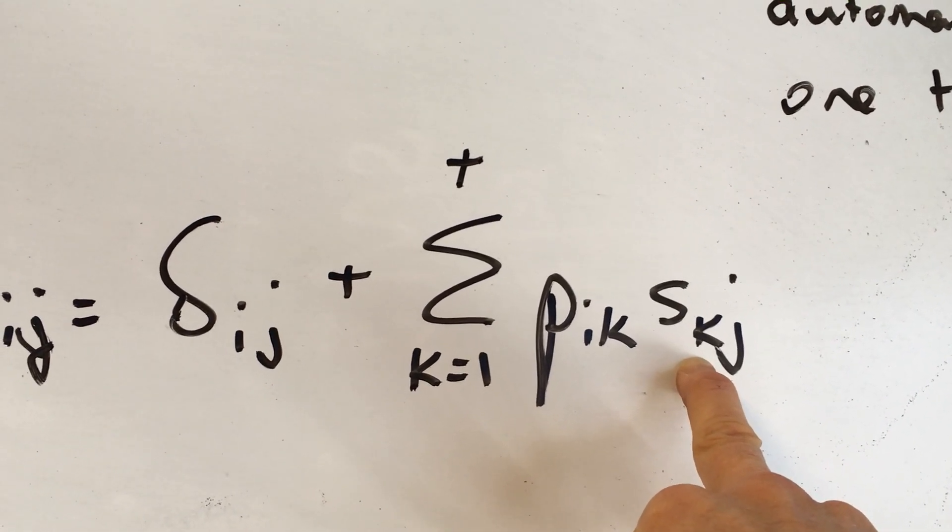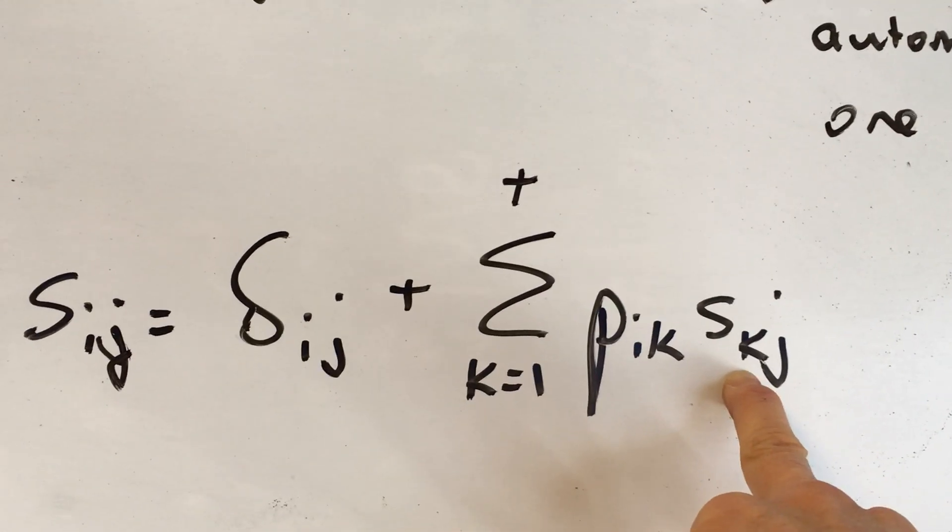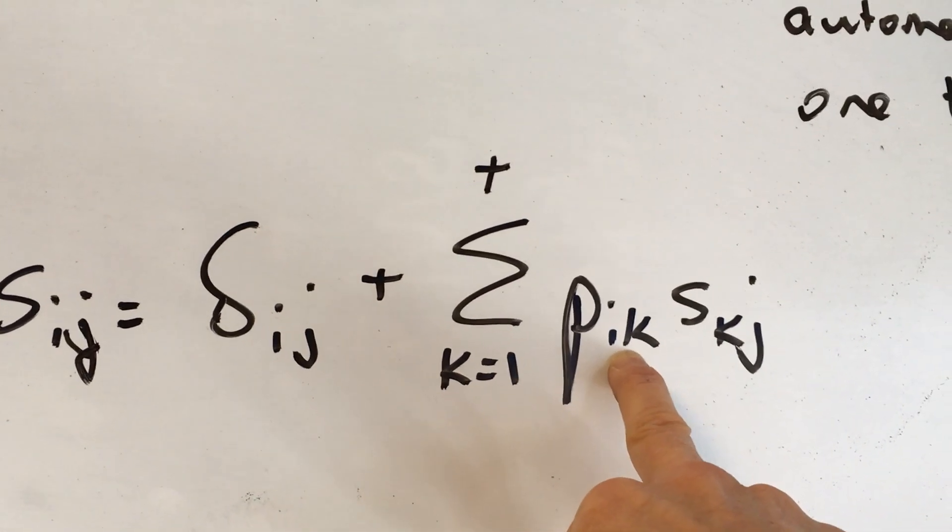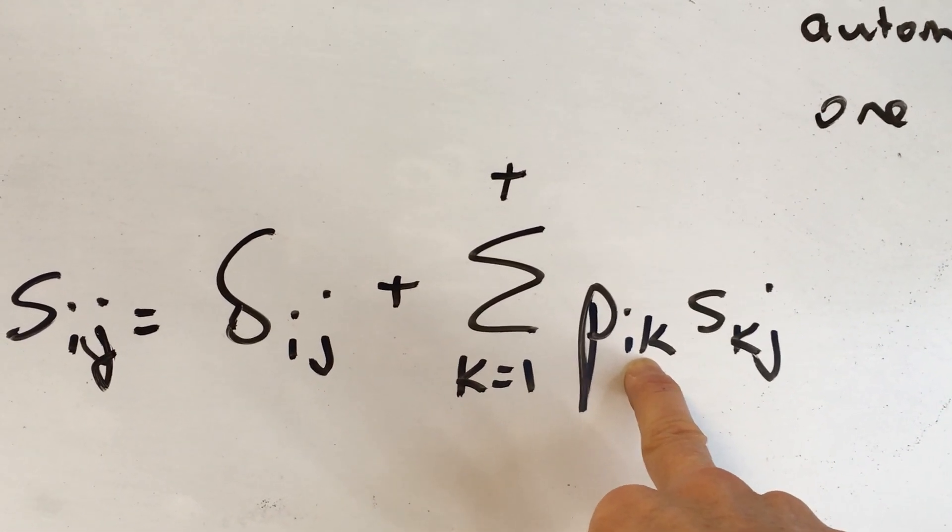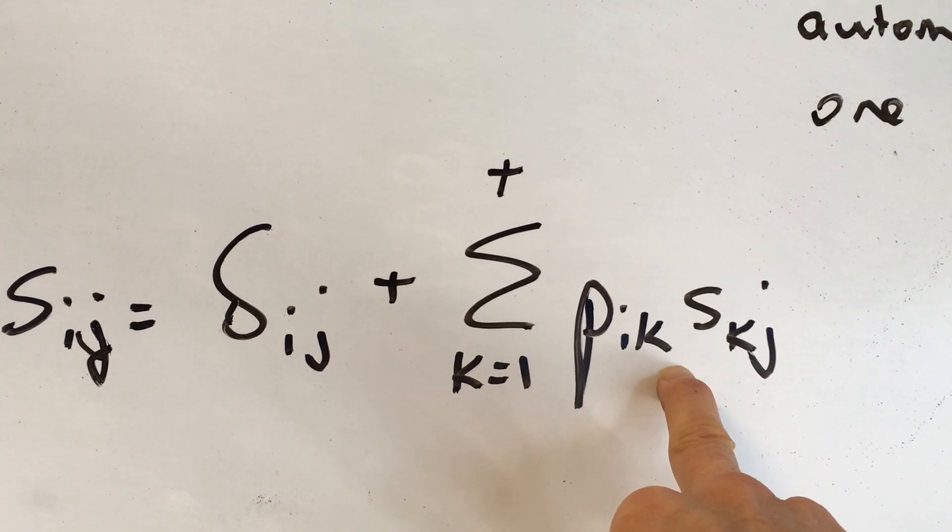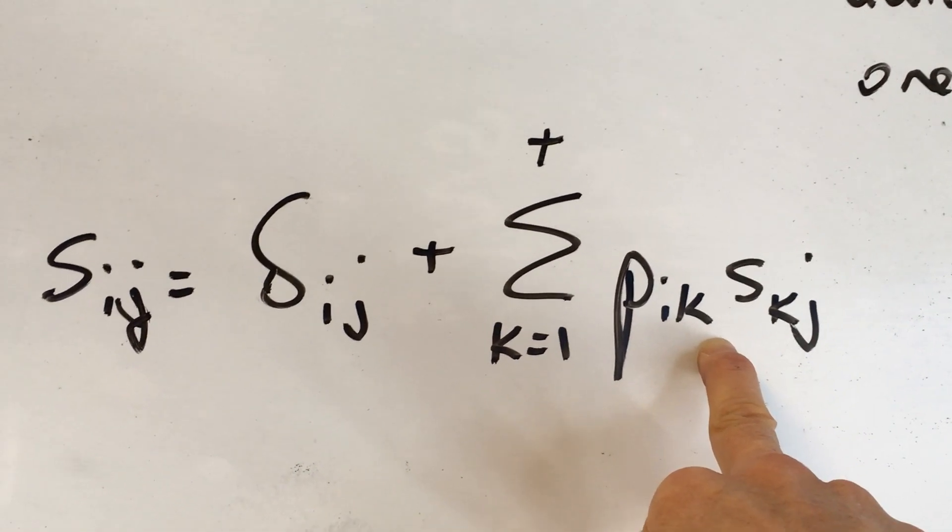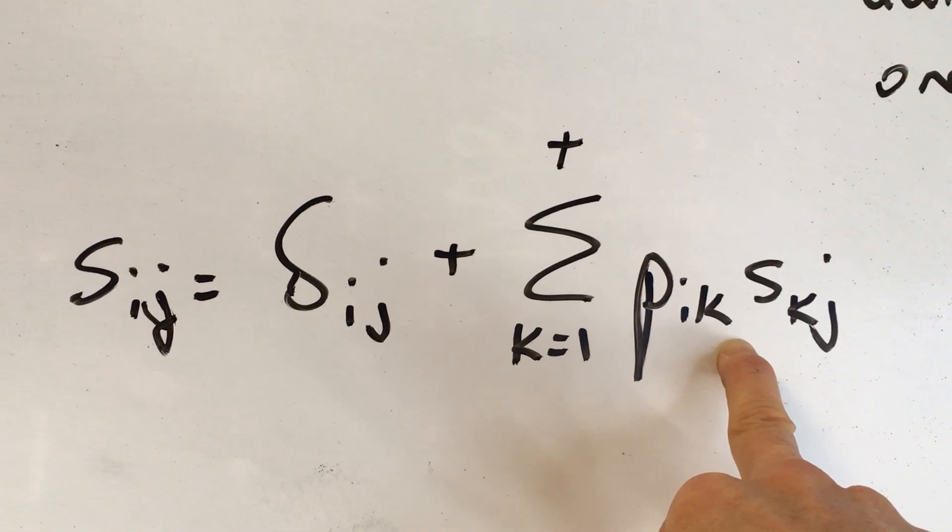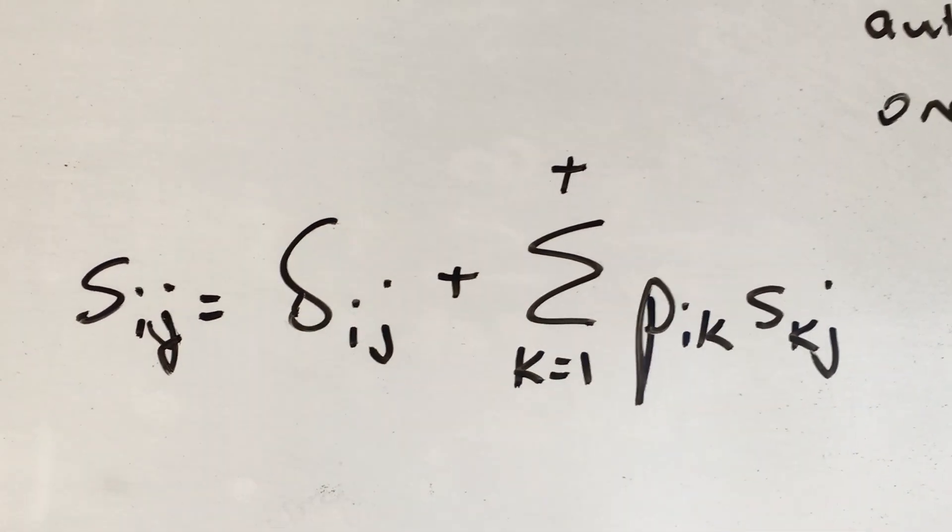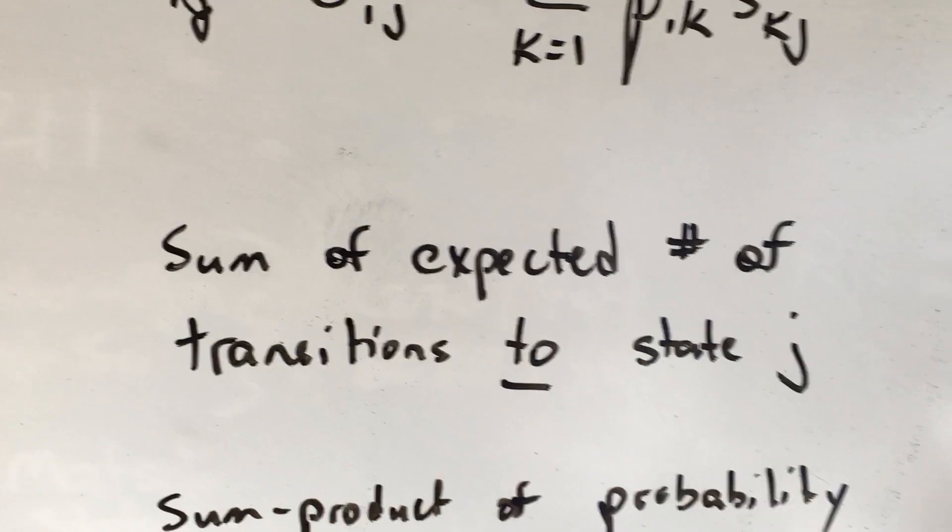So we're going to kind of push the S IJ ahead and condition on the probability of going from state I, our starting state, into state K, which is some intermediate state. So this is similar to what we've been doing so far, a little bit different. Okay, so let's take this equation, define in English a little bit better.